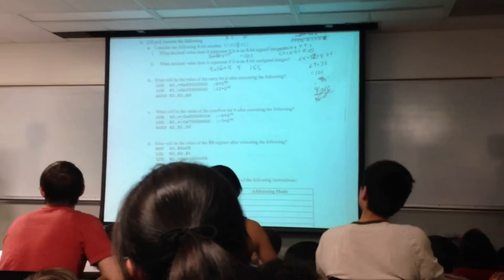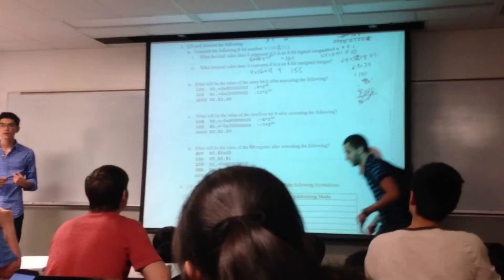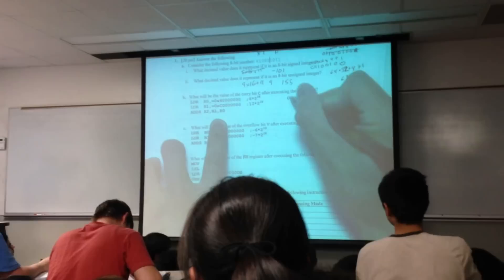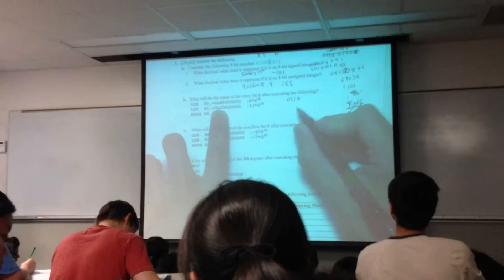Alright, okay, so what is the value of the carry bit after executing the following instructions? Can anyone tell me? One, why? Yeah, unsigned add overflow. So what happens here? What is hex 6? 0, 1, 0, 1, 1, 0.